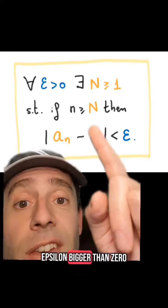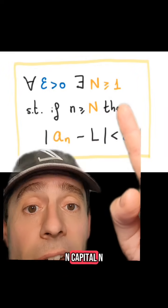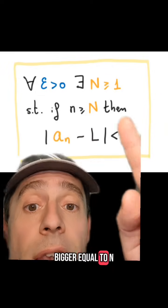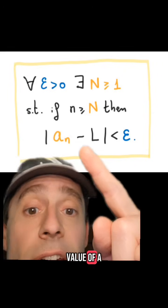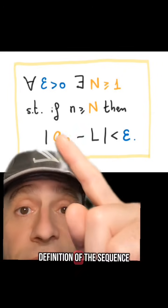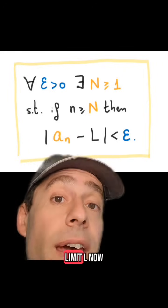So for all epsilon bigger than 0, there is an N, capital N, bigger or equal to 1, such that if little n is bigger or equal to N, then the absolute value of a_n minus L is less than epsilon, which is the definition of the sequence a_n has limit L.